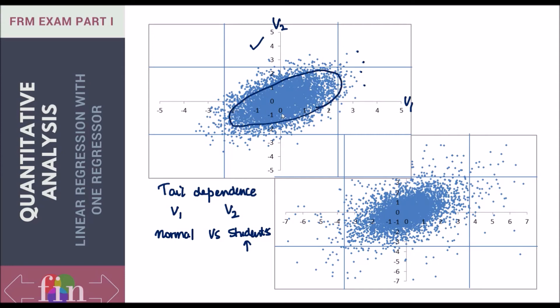There are fewer values outside this blob compared to the student's t scatter plot. In student's t, there are many more values here and here, which constitute the left and right tail. Therefore, this is a plot of student's t distribution, the lower one.